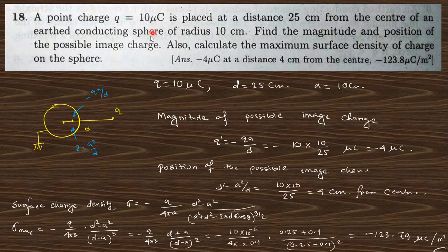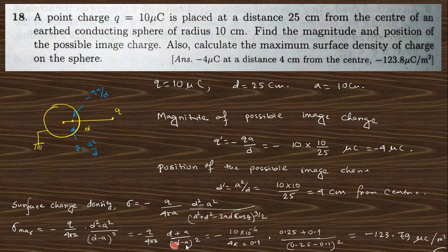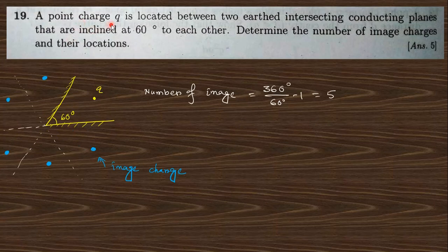Question 18: A point charge of 10 coulombs is placed at a distance of 25 cm from the center of a grounded conducting sphere of radius 10 cm. Find the magnitude and position of the image charges and the maximum surface charge density. Using the image charge formula, substituting the given values directly yields the answers.